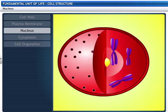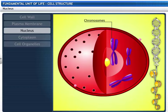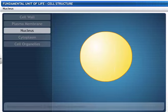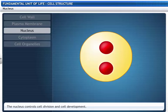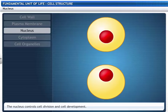The nucleus contains chromosomes. Chromosomes contain hereditary information and are composed of deoxyribonucleic acid or DNA and proteins. Functional segments of DNA are called genes. The nucleus plays a major role in cell division. It also controls cell development.